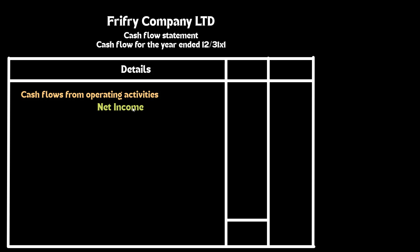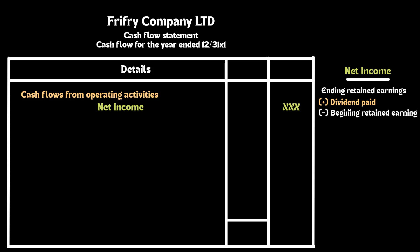To calculate cash flow from operating activities, we first need the net income of the business. You will find net income in the statement of comprehensive income in your question. If you don't see any net income figure in the income statement, then you can figure that out by taking ending retained earnings and adding dividend paid to it, after that deducting beginning retained earnings.